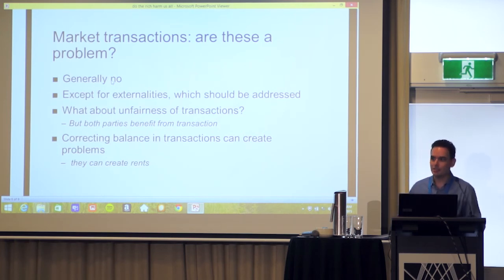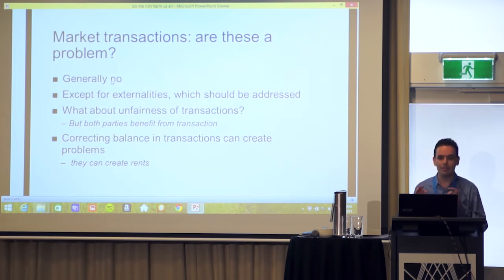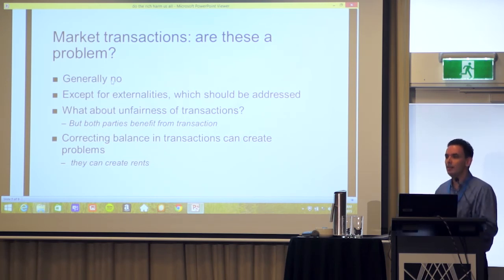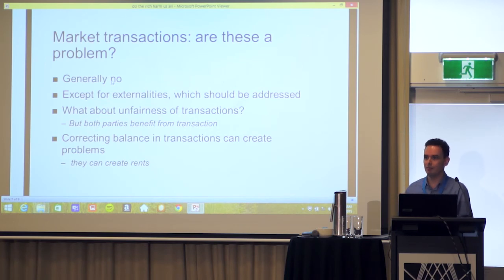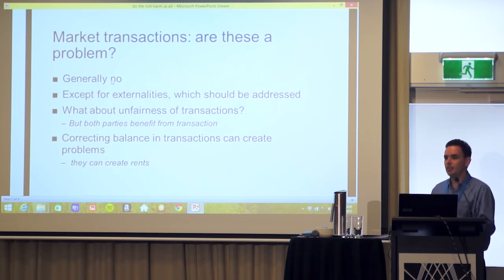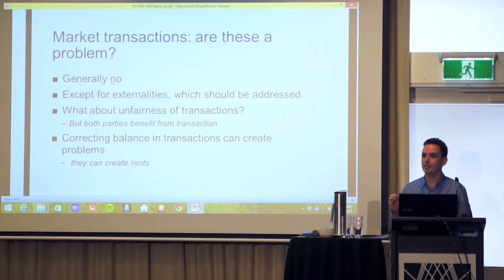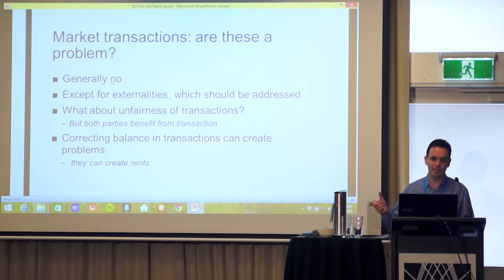More broadly, are market transactions a problem for poverty? Generally no. The only real exception is when a market transaction creates externalities — when a transaction between two people causes impact on a third, specifically non-pecuniary externalities. If there are externalities, the best way to deal with them is directly — address and fix the property rights so that you are dealing with that problem.